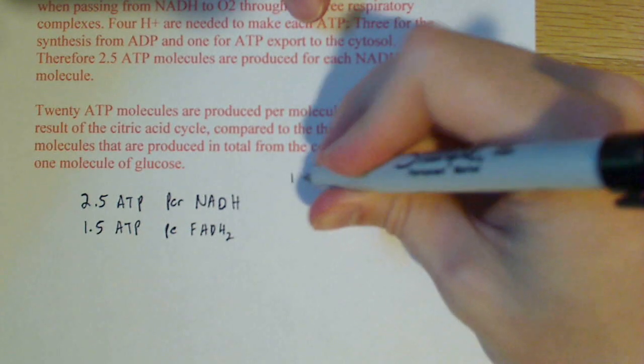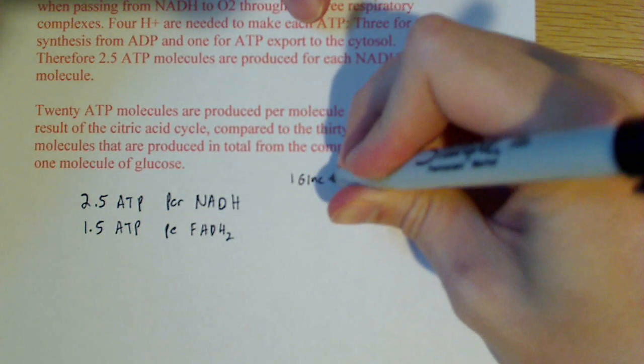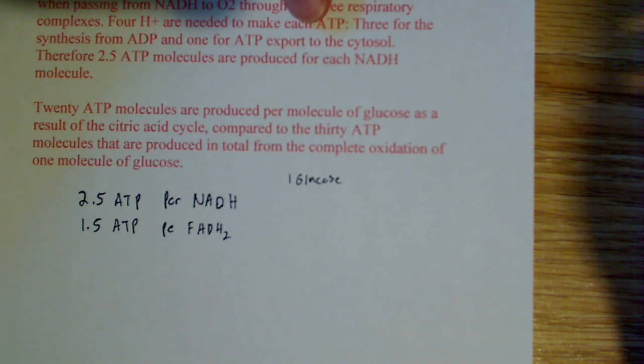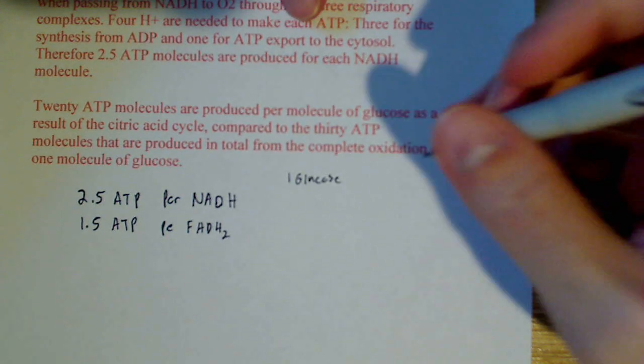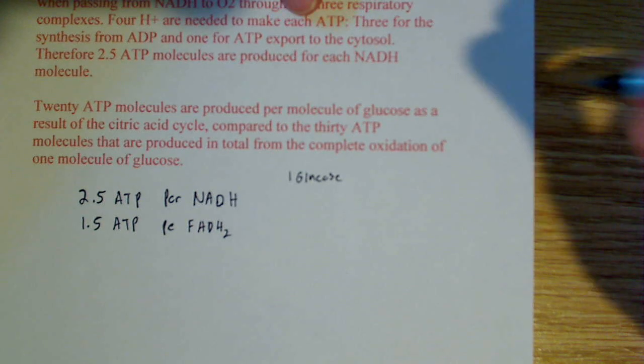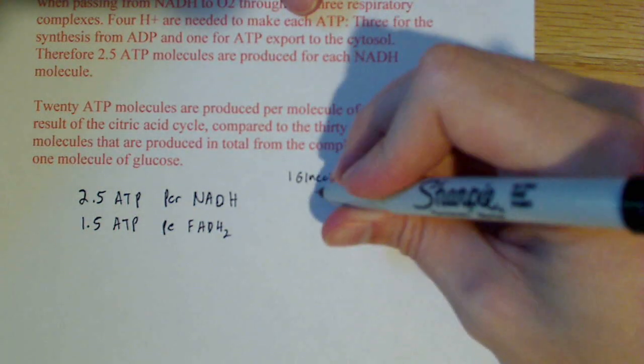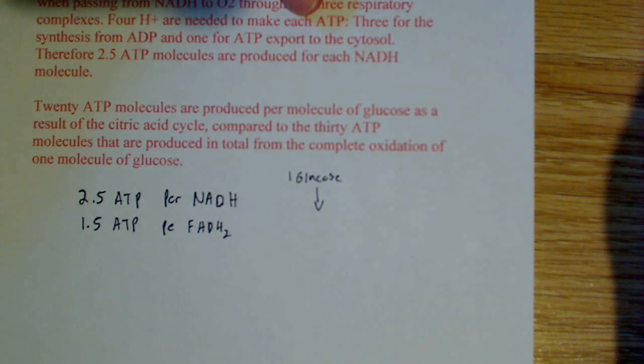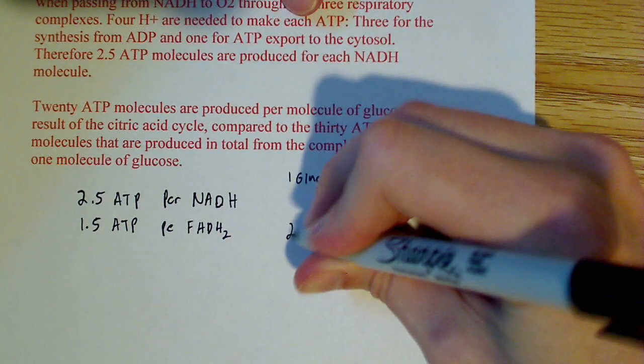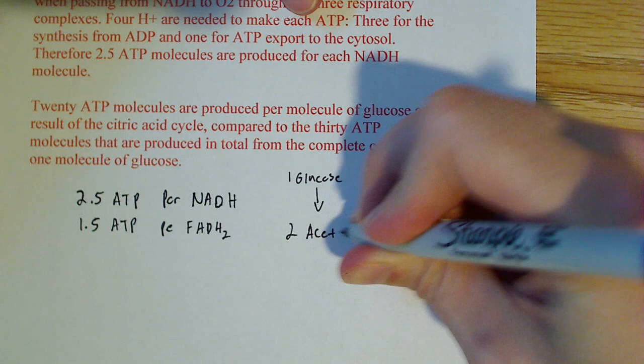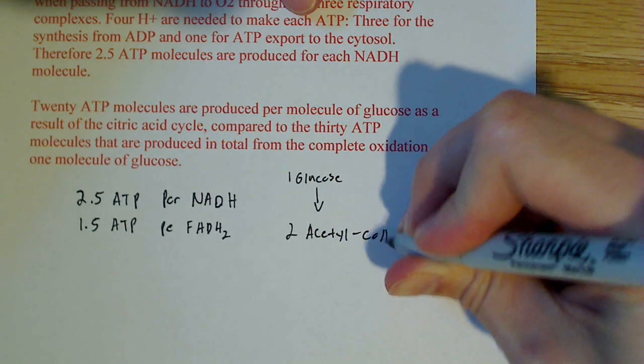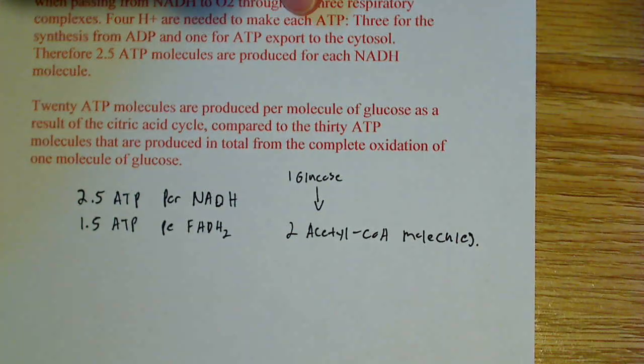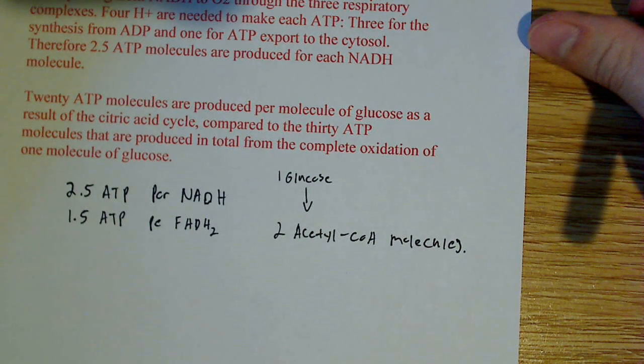Well, okay, we have one glucose molecule. But remember, that's already split into pyruvate, and each pyruvate becomes one acetyl-CoA molecule. So what we wind up having here as a result of the first glucose molecule, what enters, what actually enters the citric acid cycle, is 2 acetyl-CoA molecules.